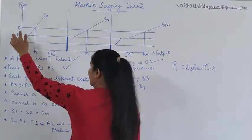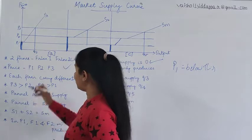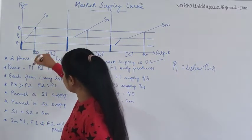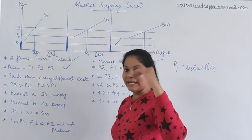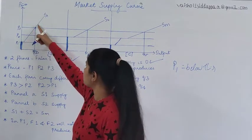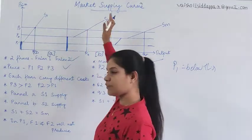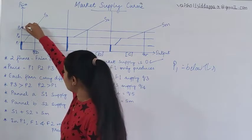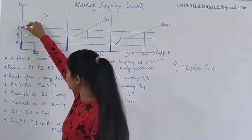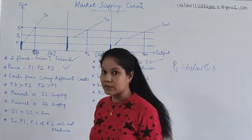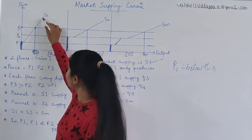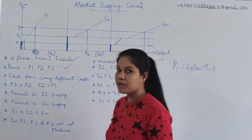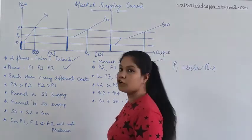When price is P2 and especially when price is P3, firm A is supplying Q3. As price increases, supply also increases — you can see the supply curve shifting to the right. So at P3, firm A is ready to supply Q3.